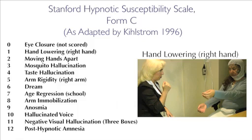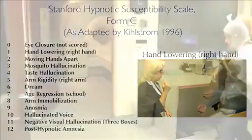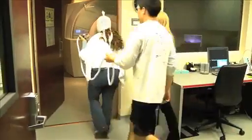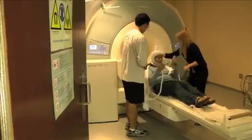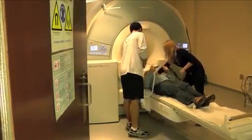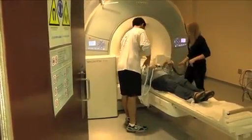Hypnotic susceptibility is then assessed via the 12-point Stanford scale of hypnotic susceptibility form C. The subject then enters the MRI scanning room for simultaneous EEG fMRI data collection following hypnotic induction.